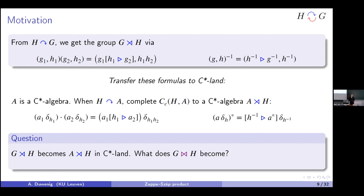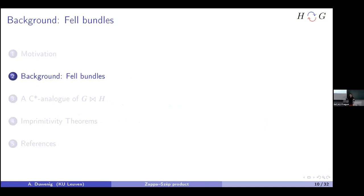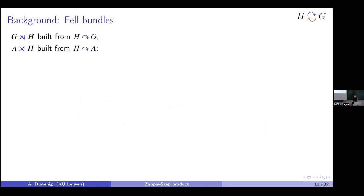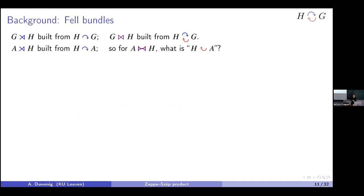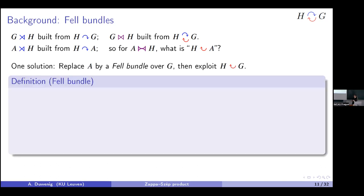We complete this to get the crossed product. The question is: if the semi-direct product of groups becomes the crossed product of C*-algebras, what does the Zappa-Szép product of groups become? And what properties of the crossed product can we generalize? To answer this, I unfortunately have to introduce Fell bundles. The semi-direct product of groups comes from a group action on a group; the crossed product comes from a group action on a C*-algebra; the Zappa-Szép product of groups is built from two actions.